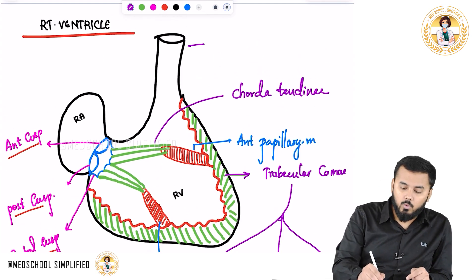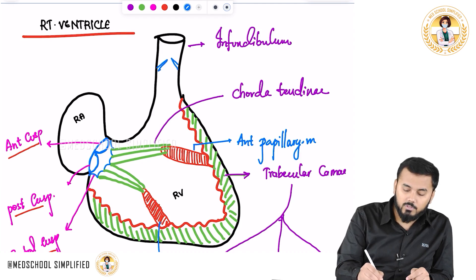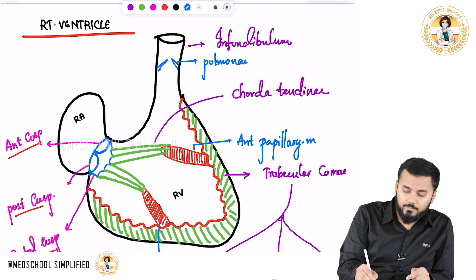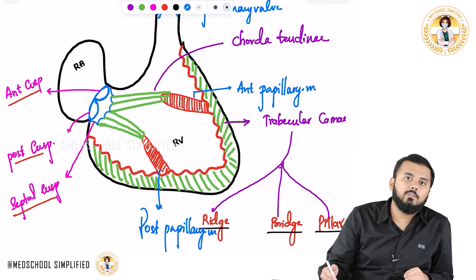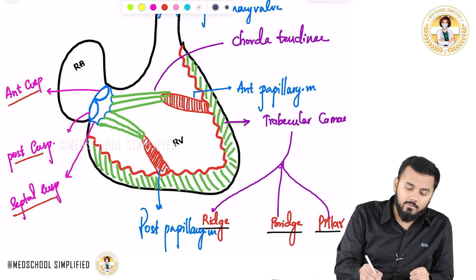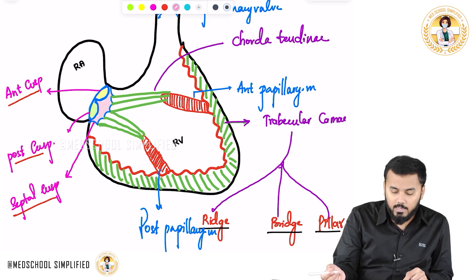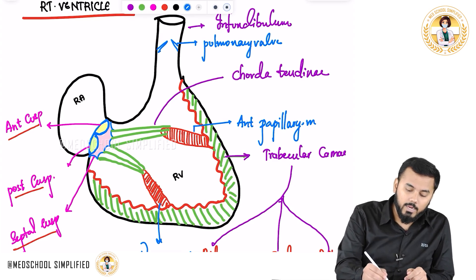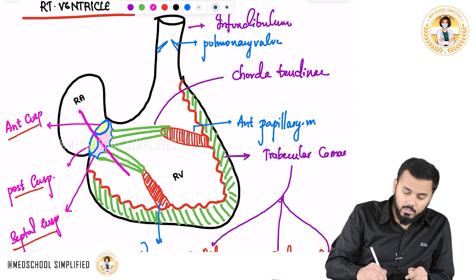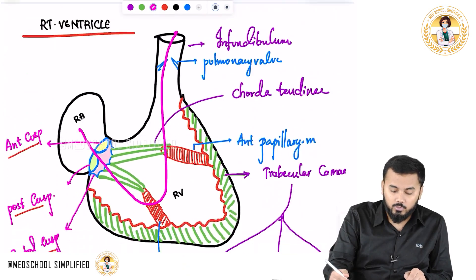These strings are called as chordae tendineae, and obviously this opening is called as the infundibulum. This part over here is called as the pulmonary valve. So to summarize: there are three cusps on the right side making it tricuspid — anterior, posterior, and septal cusp. You have chordae tendineae, the right ventricle, the right atrium, and the infundibulum. Blood flows from the right atrium into the right ventricle and then up into the pulmonary artery, and from there it goes into the lungs.